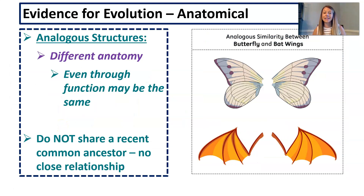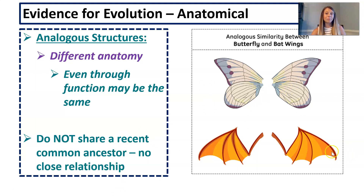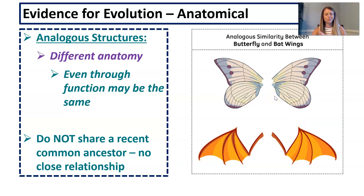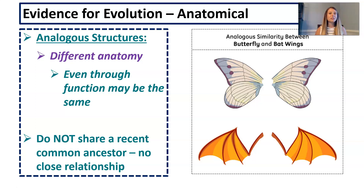Analogous structures have very different anatomy even though their function might be the same. A butterfly wing and a bat wing both function for flight, but their structure is very different — butterfly wings are made of thin layers of protein, whereas bat wings are made of bones. This suggests they do not share a recent common ancestor, but there must have been some environmental stressor that caused both to evolve the need for flight.